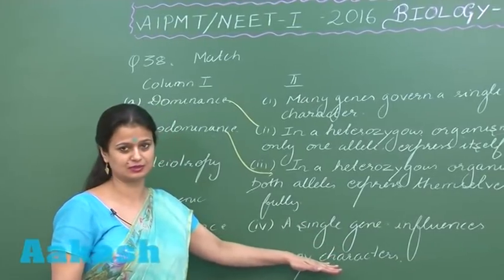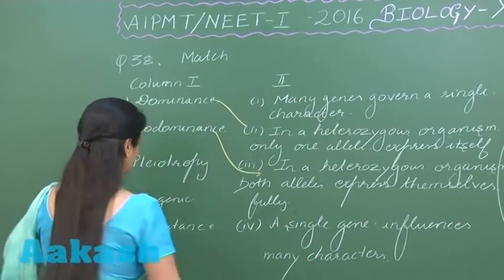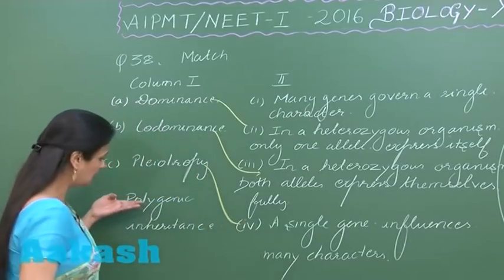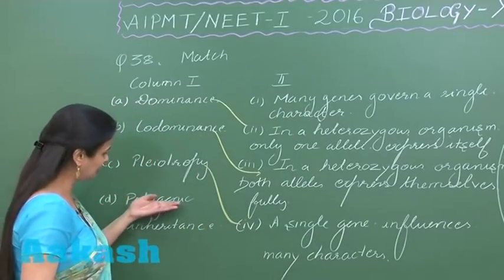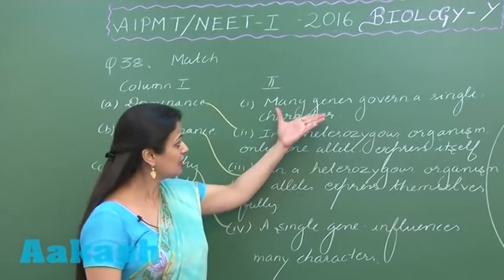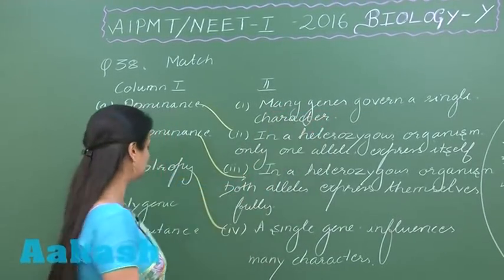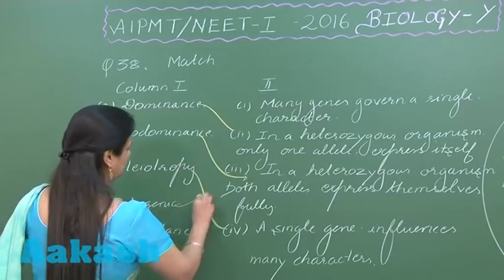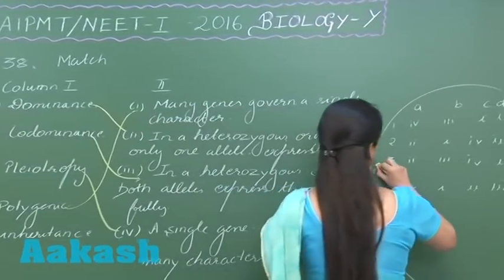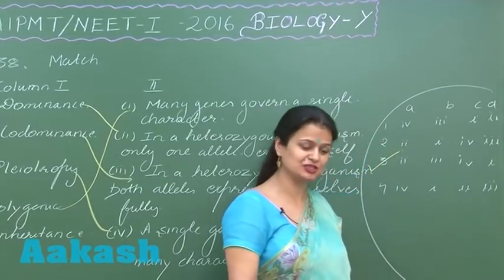A single gene influences several characters — this phenomenon is known as pleiotropy. Polygenic inheritance means many genes govern a single character. So the right option here is option number three. Let's move on to the next question.